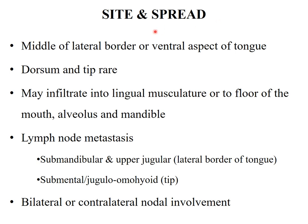Regarding site and spread: the middle of the lateral border or ventral aspect of the tongue is the most common site involved; the dorsum and tip are rare. Tumors may infiltrate into the lingual musculature, floor of the mouth, or surrounding structures like the alveolus and mandible. Lymph node metastasis is quite common in carcinoma of the tongue; the most commonly involved are the submandibular and upper jugulodigastric nodes. Bilateral or contralateral nodal involvement is also seen and has significance in management.